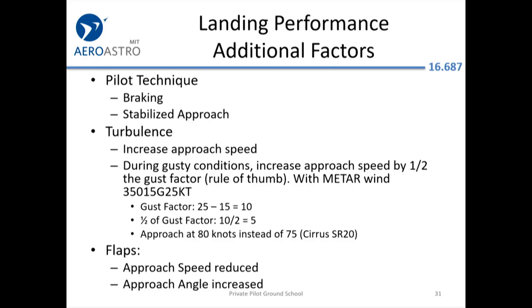In turbulence, you'll usually increase your approach speed, which means you'll chew up more runway. The rule of thumb is to add half the gust factor — so if the wind is 15 gusting 25, you speed up your approach by 5 knots. For the Cirrus, 75 knots is a good overall number and you'd beef it up to 80. Unless it really is a headwind when you're landing, you're going to chew up a little more runway than expected.